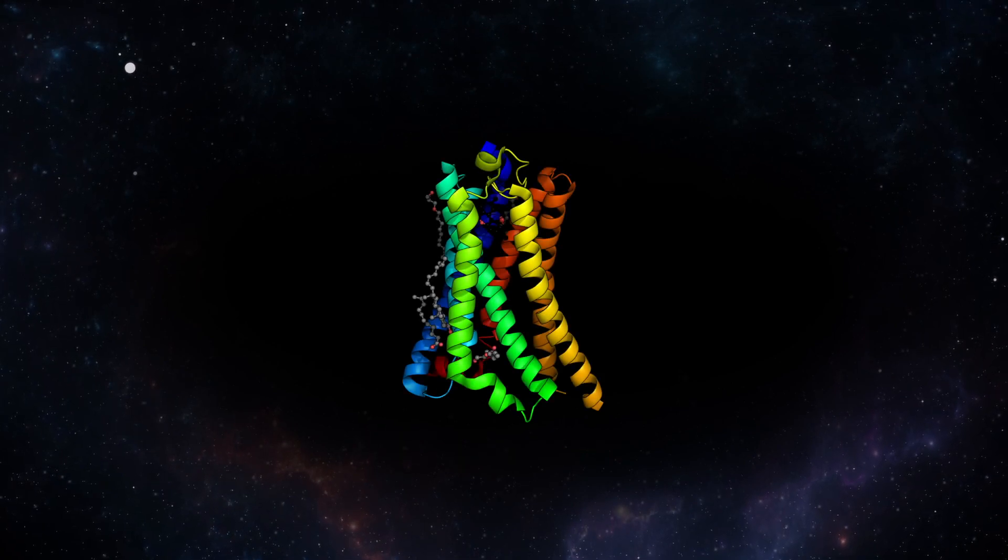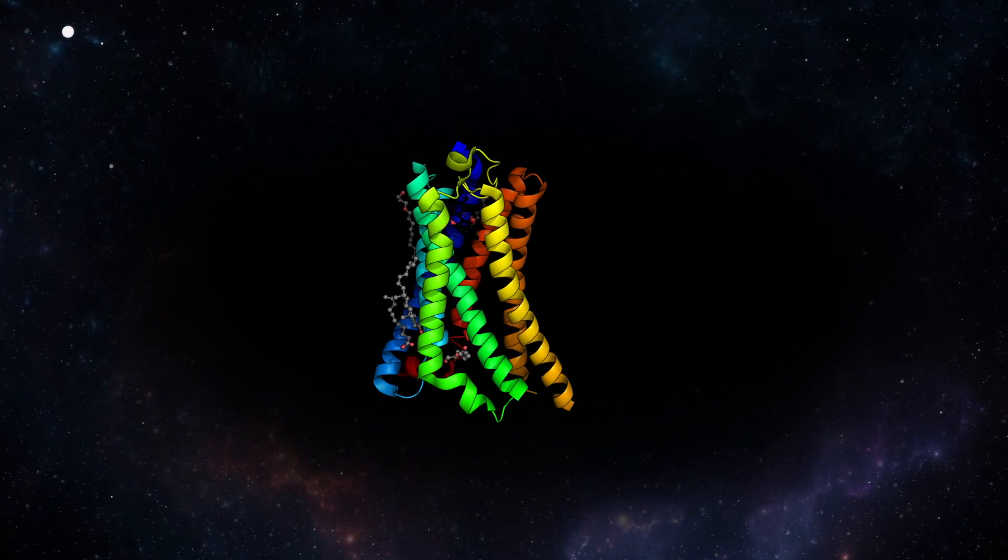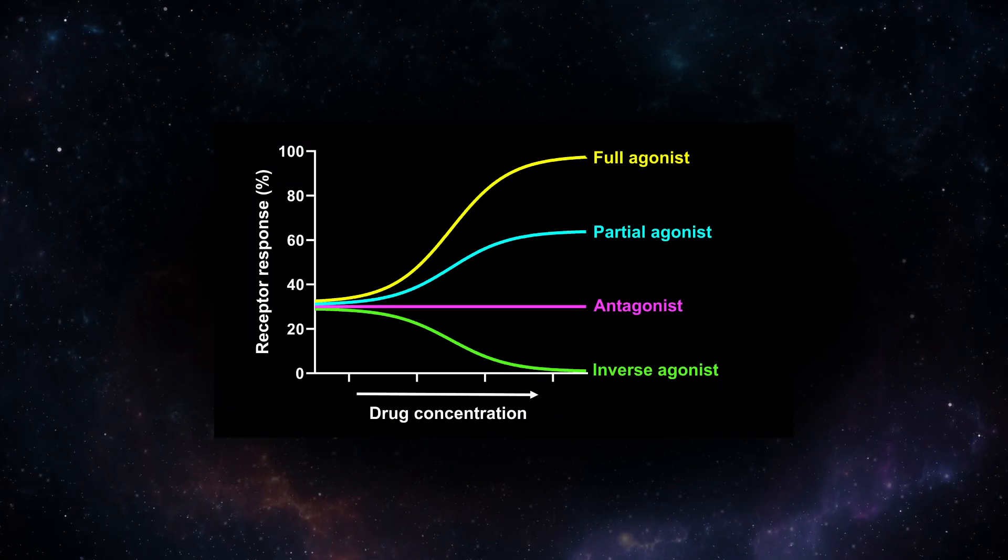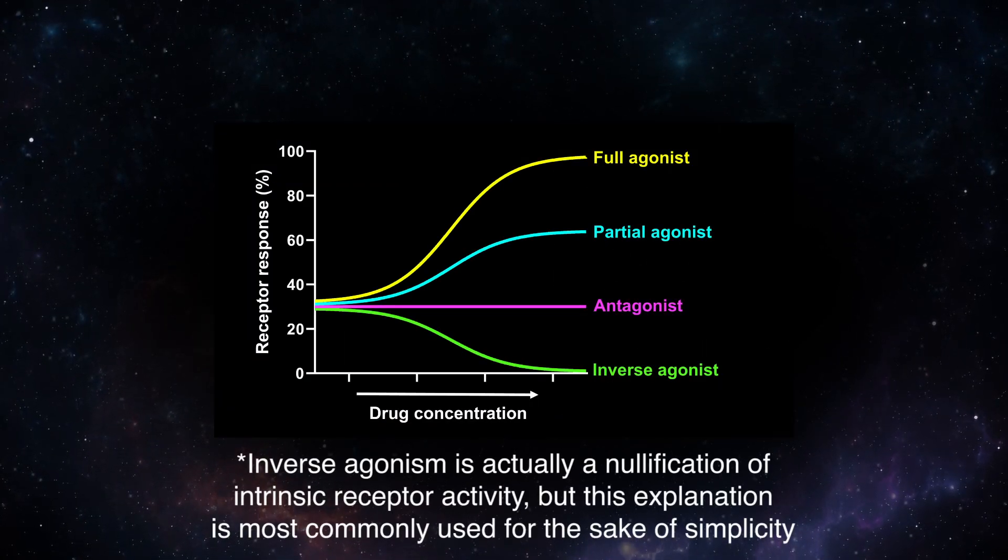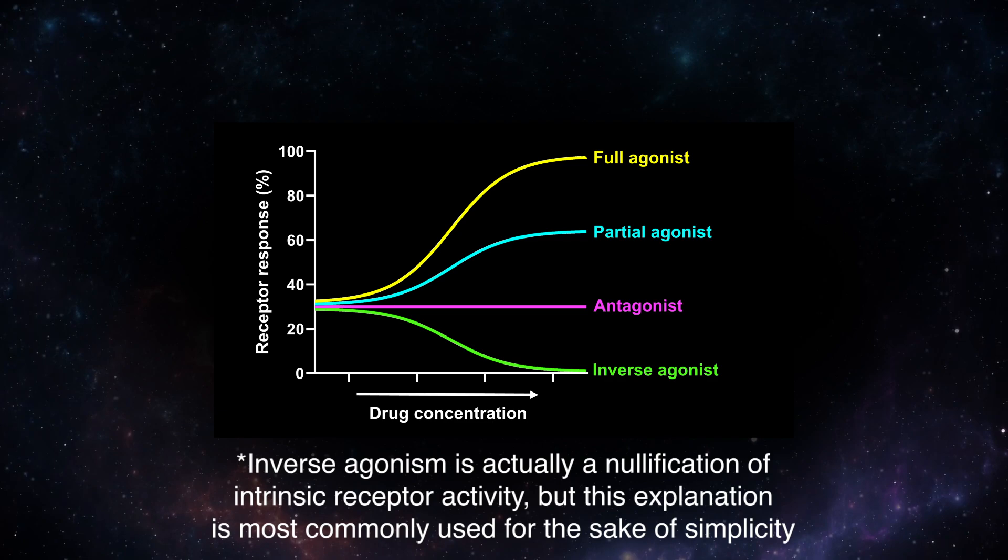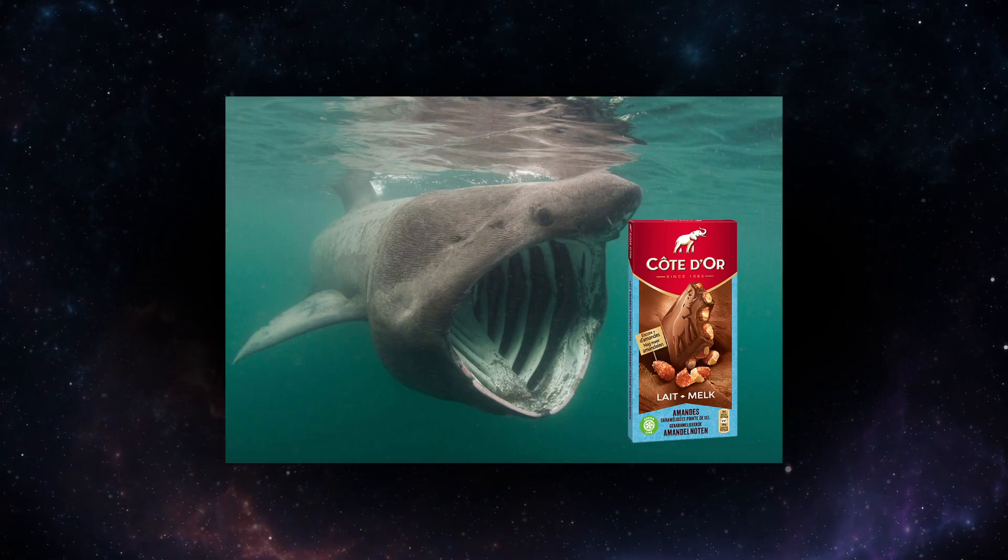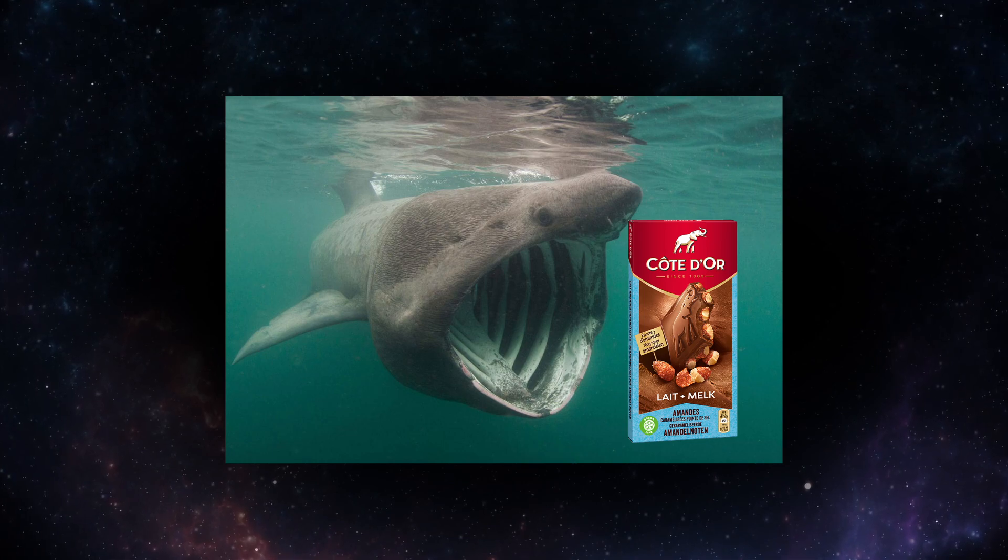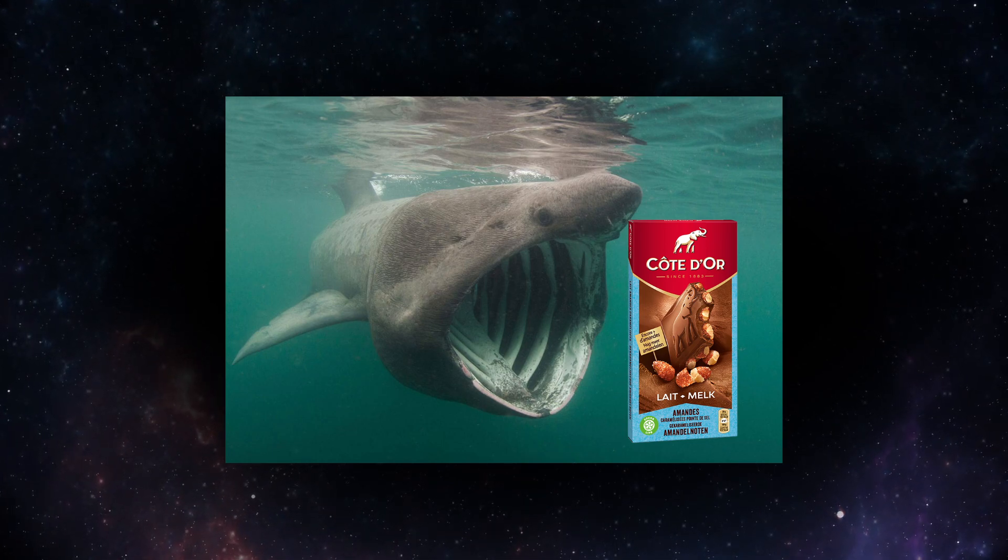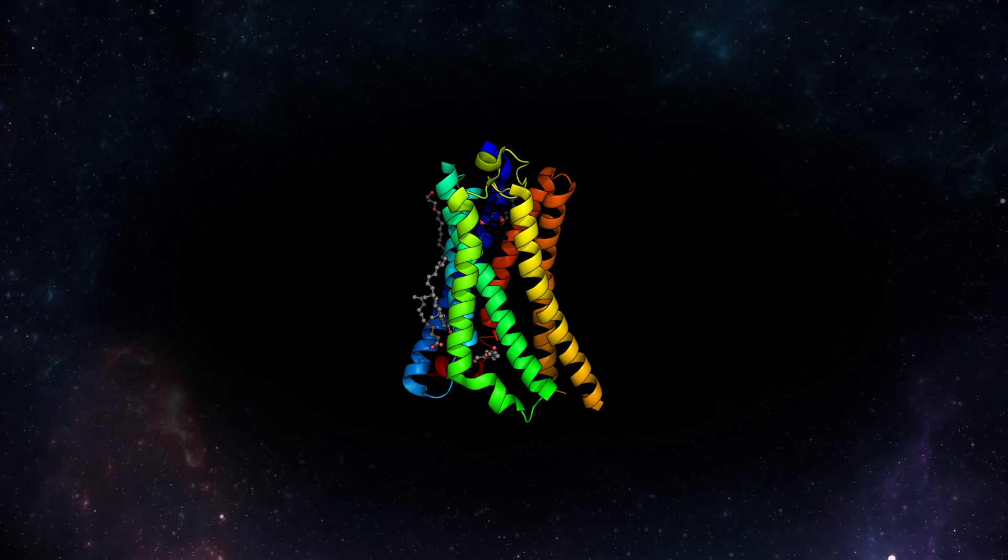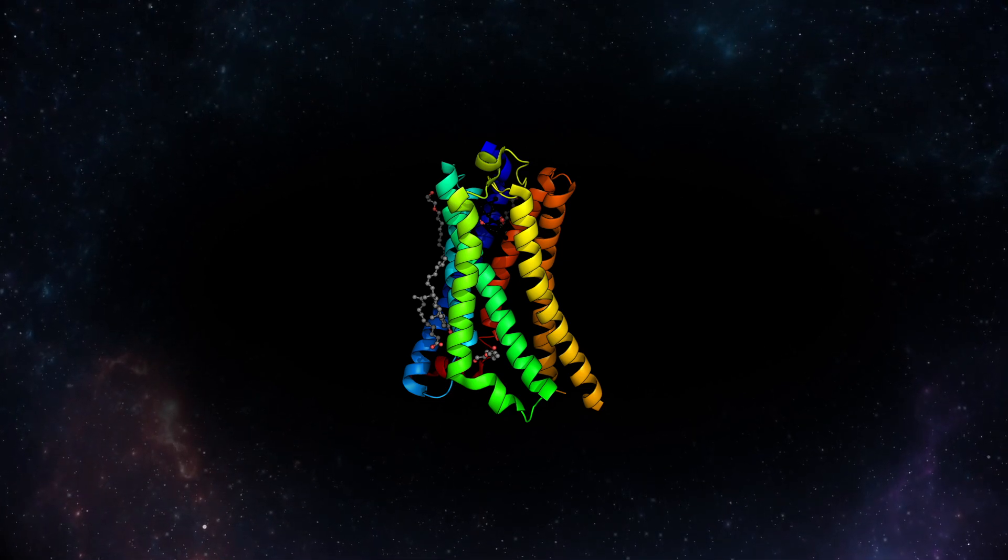Rimonabant is an inverse agonist of the cannabinoid-1 receptor. This receptor is the target of the partial agonist THC. Through inverse agonism, Rimonabant essentially evokes the opposite response of THC at the same receptor. The drug was probably inspired by the munchies, an acute appetite enhancement associated with the intake of THC. It was hypothesized that inverse agonism of this receptor could be therapeutically useful in the treatment of obesity.